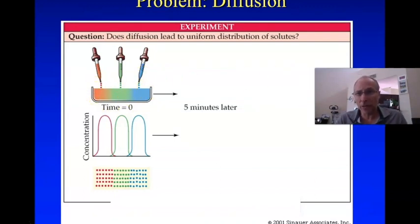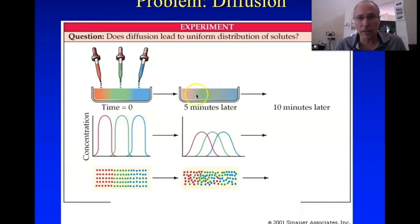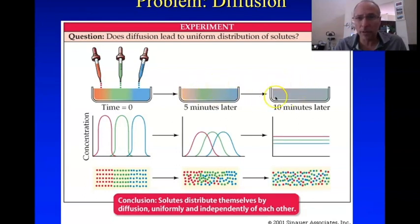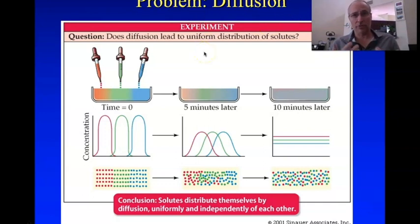Here's why. Imagine this experiment: take a petri dish, fill it with water, and then use eyedroppers to drop in water-soluble dye — red dye here, green dye here, blue dye here — in different locations. What would happen? Over time, five minutes later, these colors would start to blend until eventually — maybe ten minutes later — they're completely blended together and the entire petri dish has the same color, probably gray. That physical process is called diffusion.